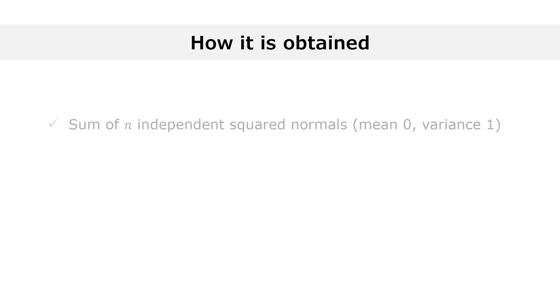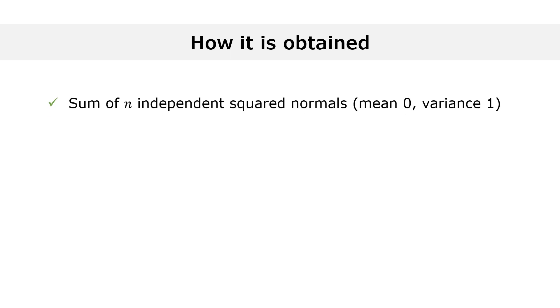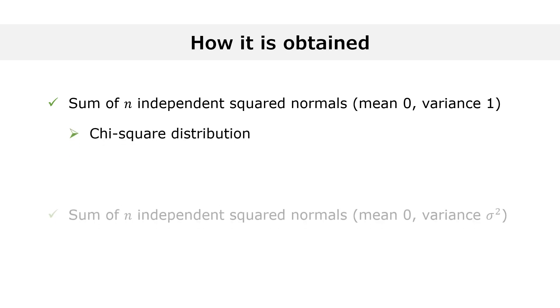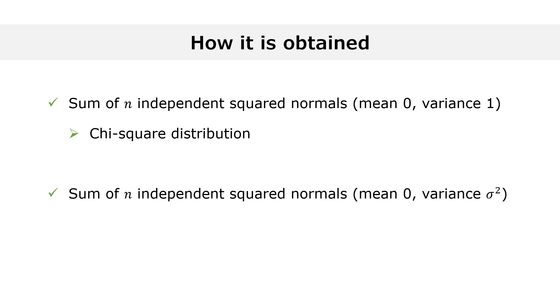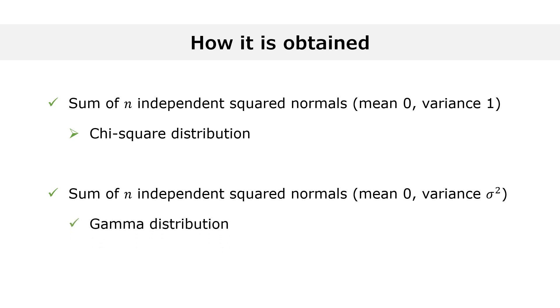The gamma distribution is a generalization of the chi-square distribution. If you sum n independent squared normal random variables that have mean zero and variance one, the resulting sum has a chi-square distribution. If you sum n independent squared normal random variables that have mean zero and variance sigma-squared, possibly different from one, the resulting sum has a gamma distribution.